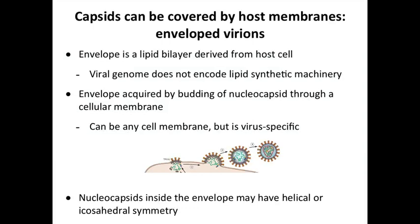Sometimes, as we mentioned earlier, you can add another component to these virions. We talked about helical symmetry and icosahedral symmetry. You can add an envelope on top of that. So you can take the helical genome of the rabies virus, put an envelope on it, and that's the infectious virus particle. The envelope is derived from the host cell, and the virus has to get it from the host cell because viruses can't make their own lipids. These are acquired by budding.